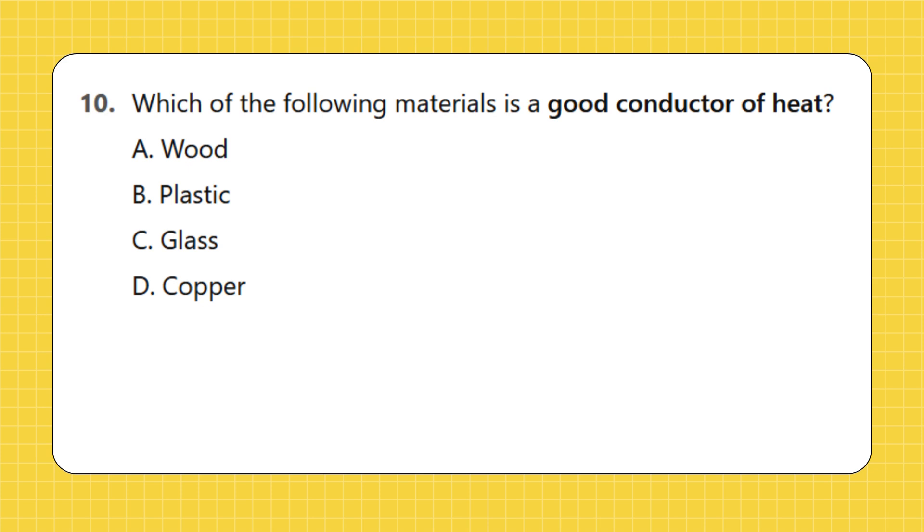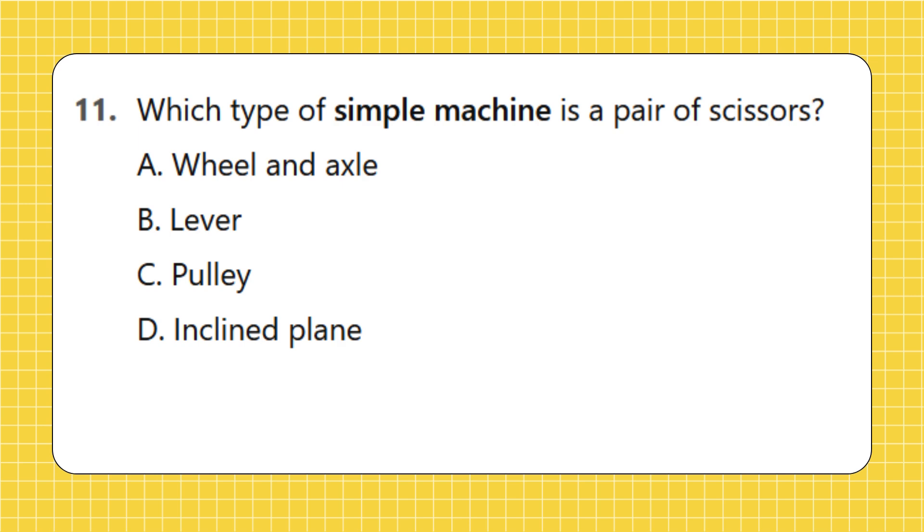Question 10: Which of the following materials is a good conductor of heat? A. Wood, B. Plastic, C. Glass, D. Copper. Question 11: Which type of simple machine is a pair of scissors? A. Wheel and axle, B. Lever, C. Pulley, D. Inclined plane.